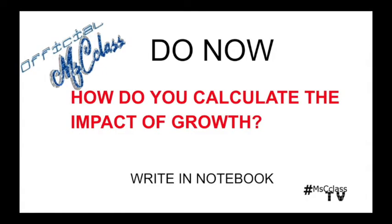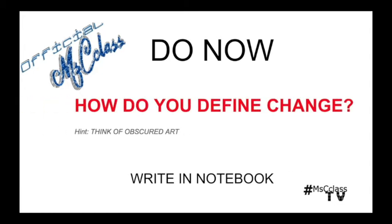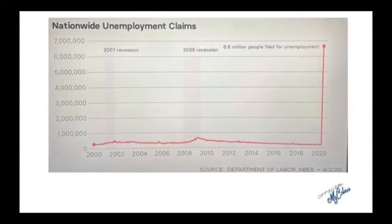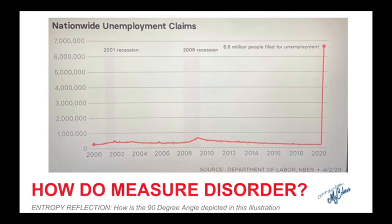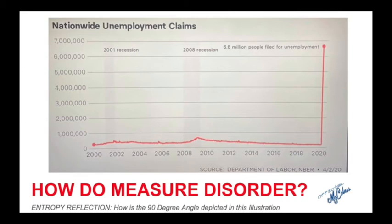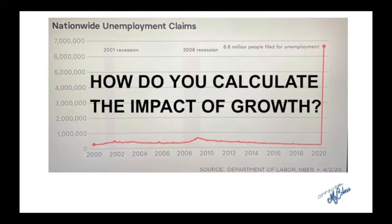Are you ready for the do now? Great, let's get started. How do you calculate the impact of growth? Write it in your notebook. Or ask yourself: how do you define change? The best way to think of this is to consider your obscured art from last time. For example, let's think about the nationwide unemployment claims. If you notice this chart, you see a 90-degree angle. We should read what this chart is about — it's the nationwide unemployment claims. How do you define change in this instance? How do you measure disorder? How is the 90-degree angle depicted here?